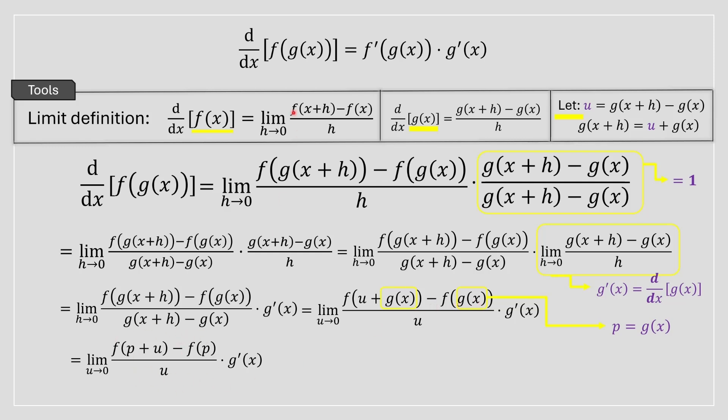And after, this looks familiar to the limit definition. So basically, it's going to be the derivative of f inside p as shown over here. And p, we know what it is, it's just going to be g of x and that's the final answer. And that's how you prove the chain rule.